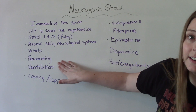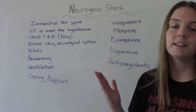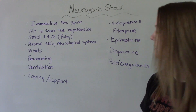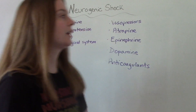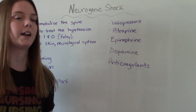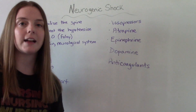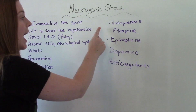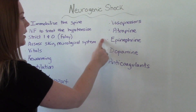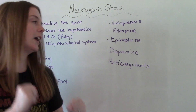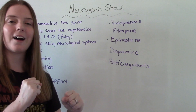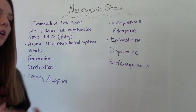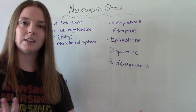Sometimes these patients will need to be intubated and ventilated. Coping and support is important because this is scary for both the patient and the family — have them express their concerns and fears, answer questions, and be a supportive presence. Medications include vasopressors to help constrict the blood vessels and bring blood pressure up; atropine to help with the bradycardia; ephedrine for the low blood pressure; and dopamine as a vasoconstrictor to also help with heart rate. These patients are also at risk for DVTs and blood clots because blood tends to pool, so they'll likely be on a prophylactic anticoagulant.